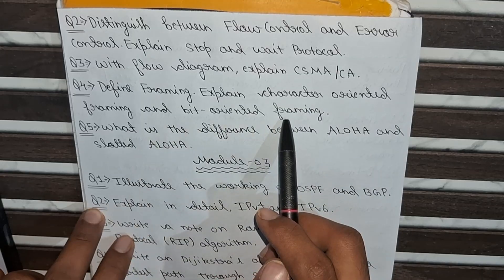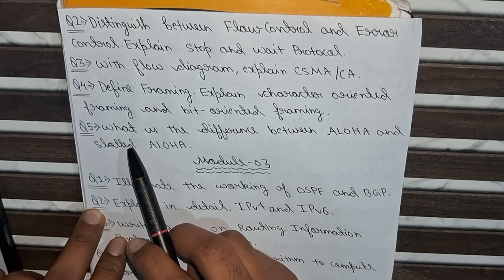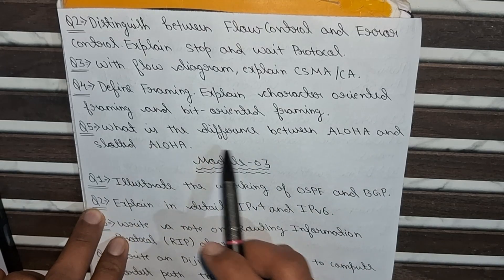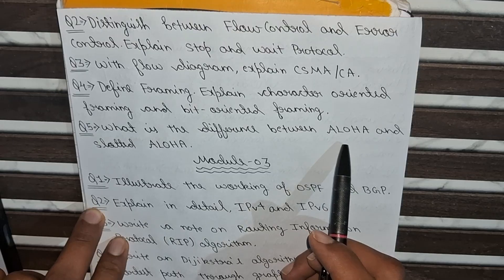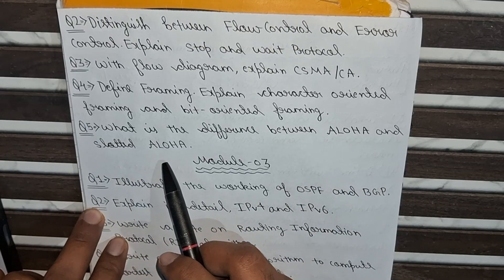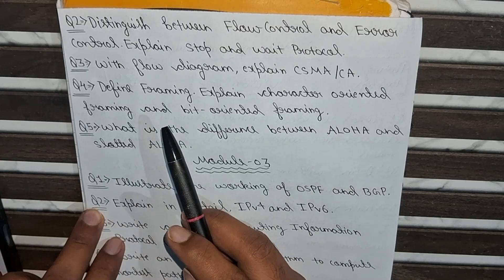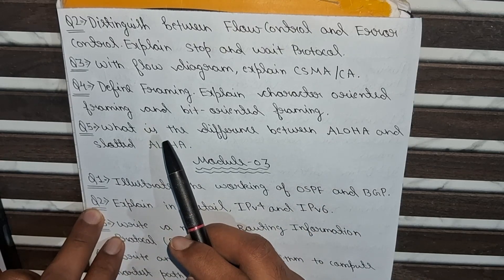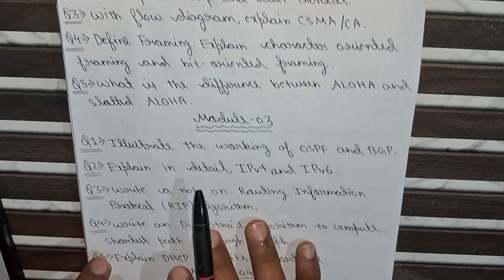The fifth question from Module 2 is: What is the difference between ALOHA and Slotted ALOHA? These are the 5 questions from Module 2. Now moving to Module 3.